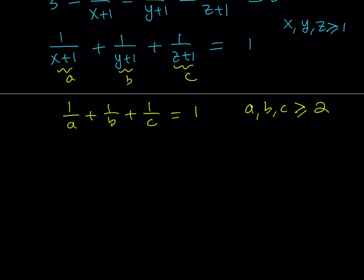Now what we're going to do is look at this equation — it's a very special type. Usually with these types of equations, and I think we've done a problem like this in a previous video on Diophantine equations — I'm going to share the link down below. We're going to use inequalities. Without loss of generality, WLOG, I'm going to suppose that A is less than or equal to B, and B is less than or equal to C. This implies that the reciprocals are in the reverse order, so 1 over C is less than or equal to 1 over B, and that is less than or equal to 1 over A.